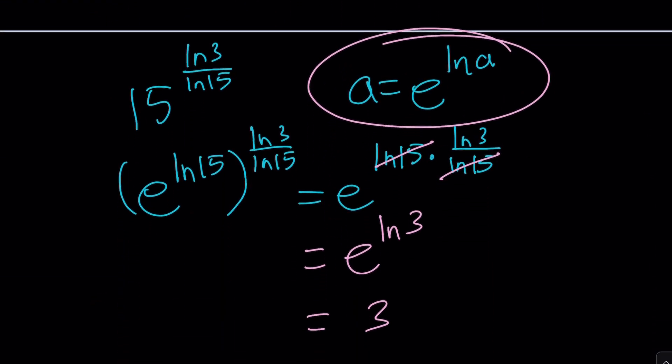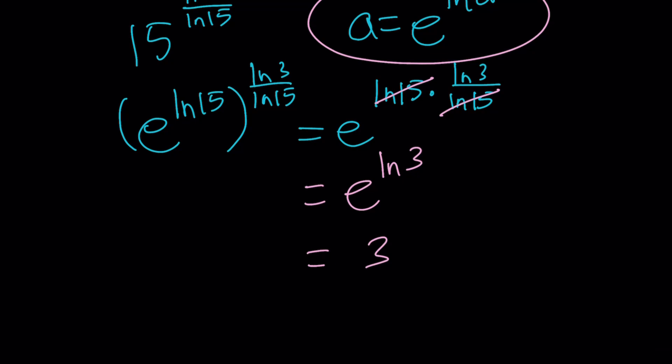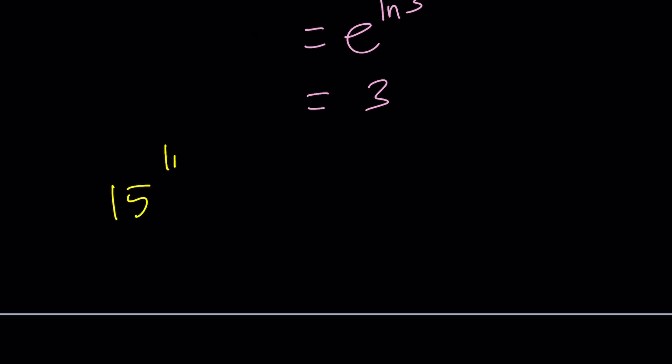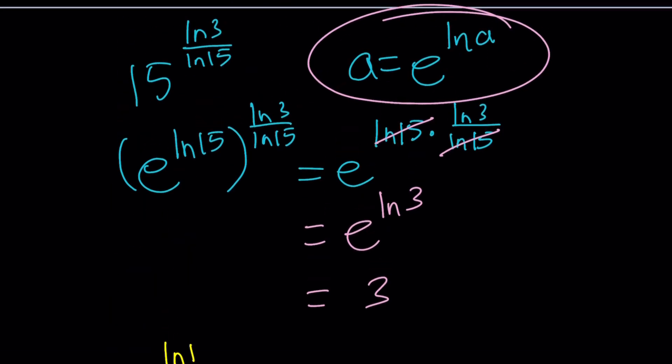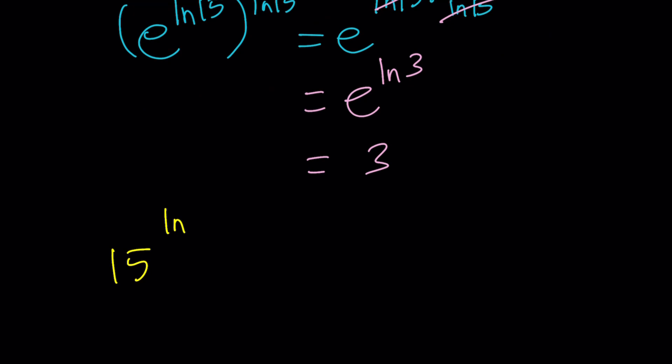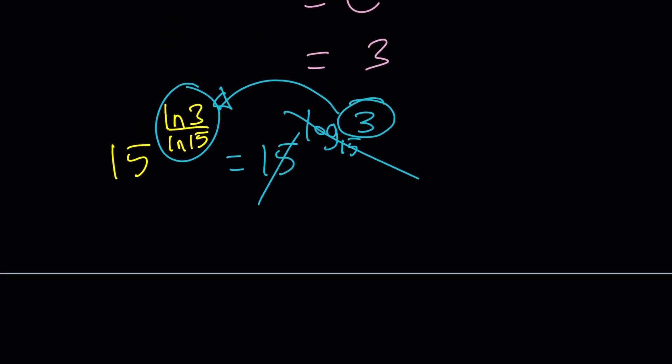As I said earlier, there's another way to approach it within the first method. Once you've got 15 to the power ln 3 over ln 15, use the change of base formula backwards. This can be written as log 3 with base 15. That's what it means, the change of base formula. Now 15 cancels out, and we end up with 3. That's how the rule works, and this gives us 3 right away.